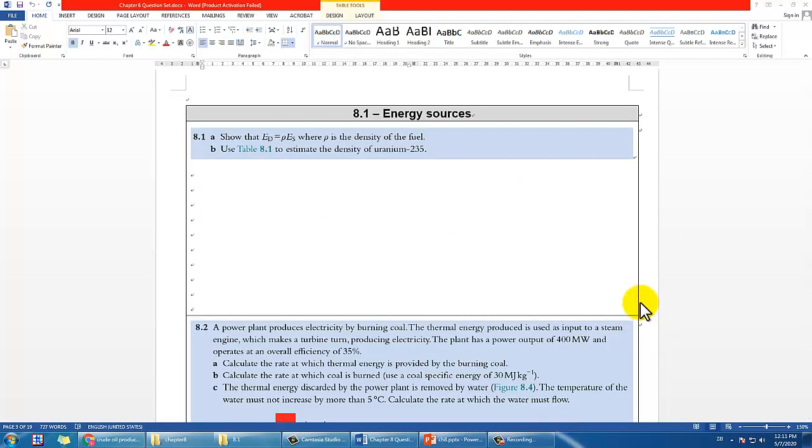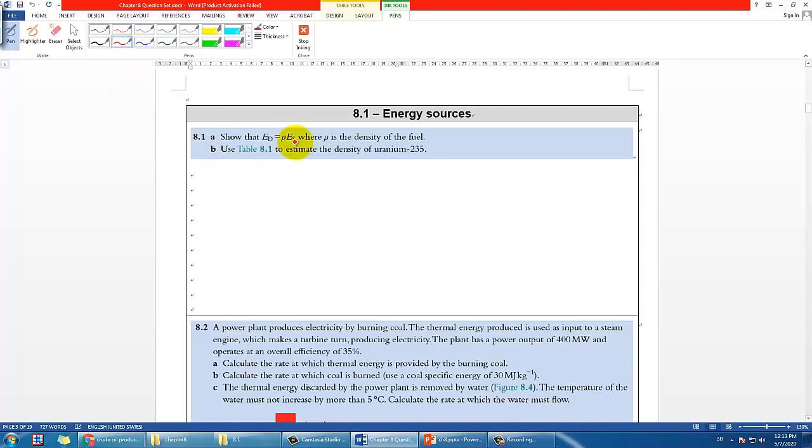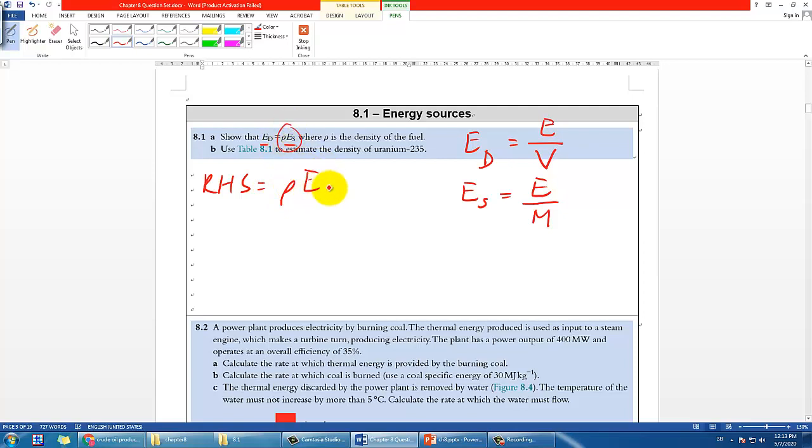Now I'd like you to try Example 8.1 in the question set. Pause the video and we'll check the answer. The first part asks you to prove this equation. I don't find this very useful in IB, but proving equations is part of the fun in physics. We have to define ED and ES properly first. ED is energy density, so that's energy per volume. ES is energy per mass.